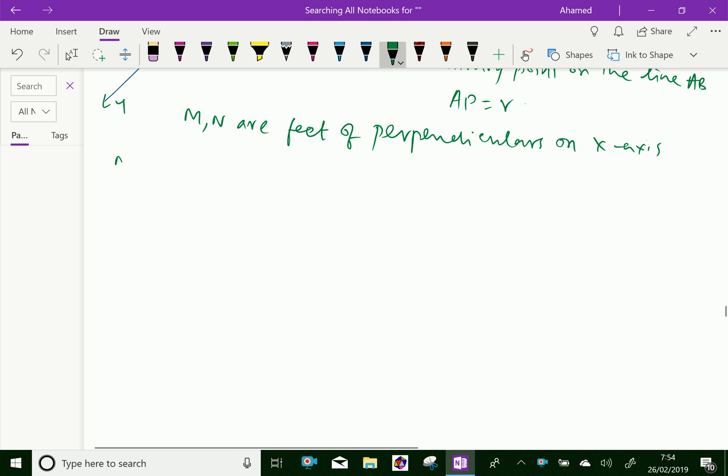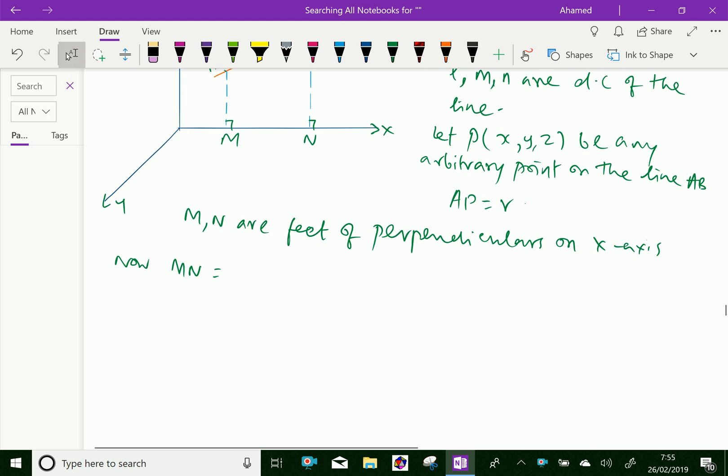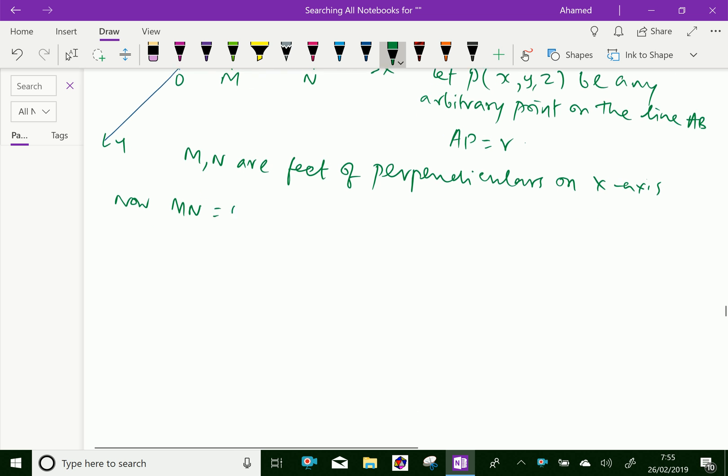Now, MN equals ON minus OM, which equals X minus X1. This is called projection of AP on x-axis.